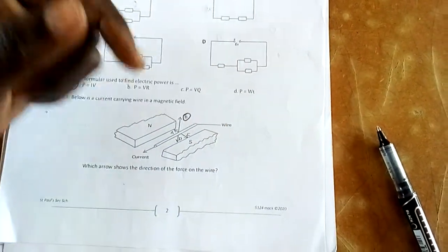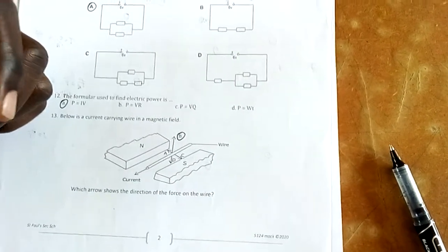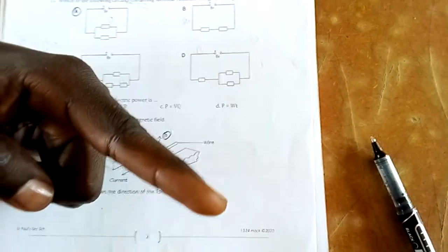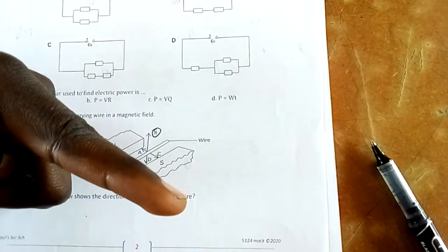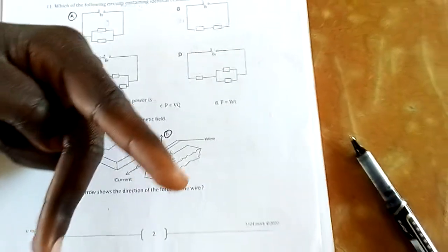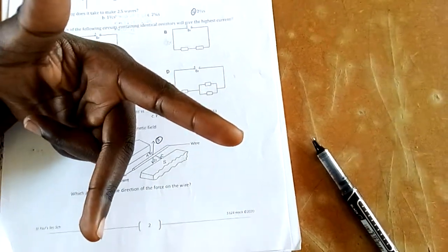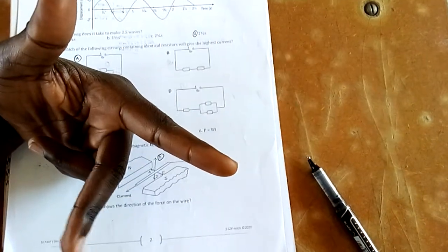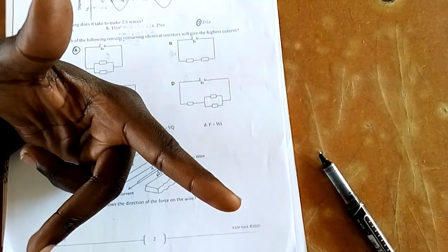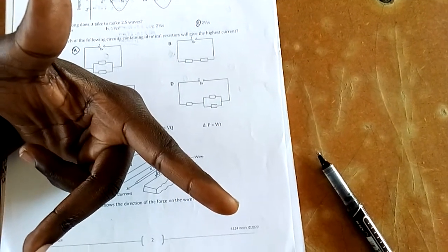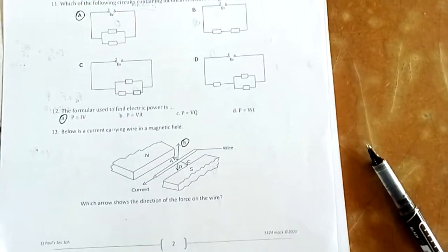The motor rule: the thumb shows direction of force, the first finger shows direction of magnetism, and the middle finger shows direction of current. Magnetic field lines run from north to south, so I point to the south. The current is in that direction. Then the force will be upwards. Make sure you align the fingers accordingly. My direction is B, which is upwards.